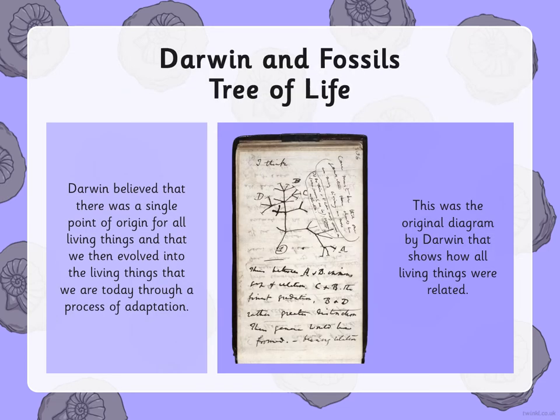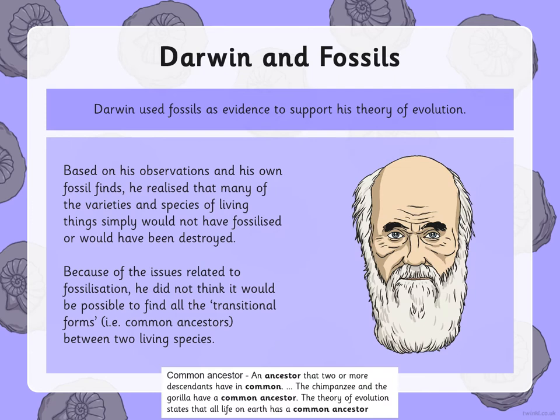Darwin and fossils — the tree of life. Darwin believed that there was a single point of origin for all living things and that we then evolved into the living things that we are today through a process of adaptation. This was an original drawing by Darwin that shows how all things were related. Darwin used fossils as evidence to support his theory of evolution. Based on his observations and his own fossil finds, he realised that many varieties and species simply would not have fossilised or would have been destroyed.